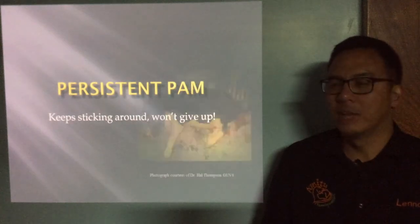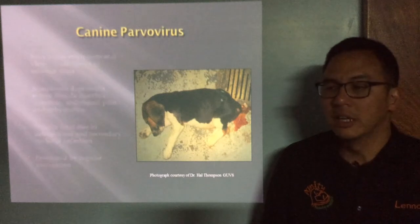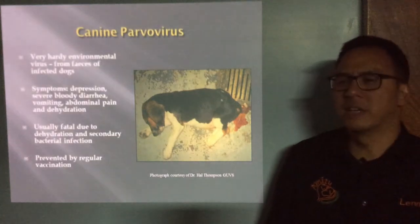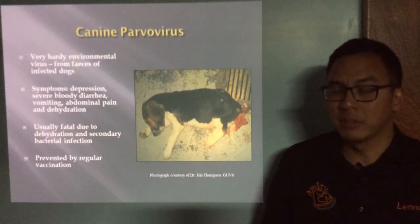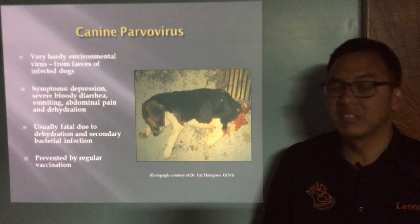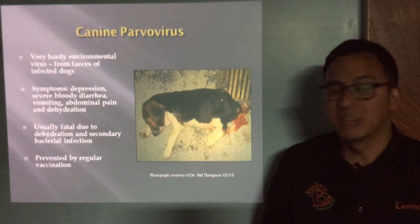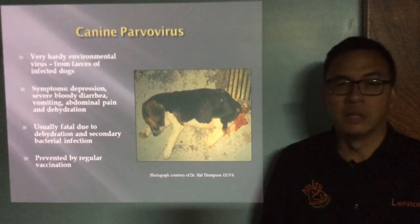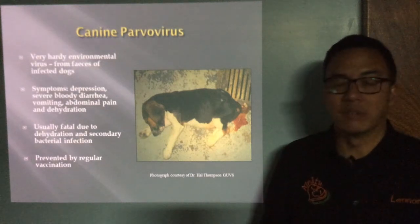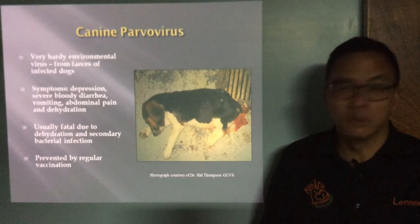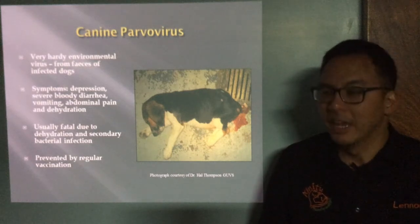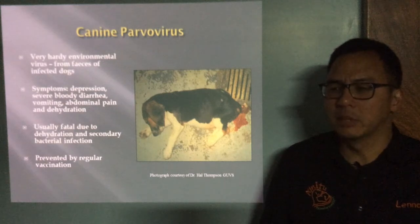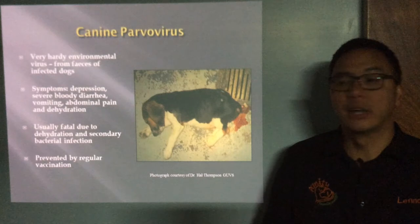Persistent Pam — she keeps sticking around and won't give up. We're talking about canine parvovirus. It is a very hardy environmental virus, usually spread from the feces of infected dogs. It is a real problem because it persists in the environment for a very long time and is extremely difficult to bleach away if there is a case at a hospital. Symptoms can be quite dramatic — depression, lethargy, and severe bloody diarrhea.